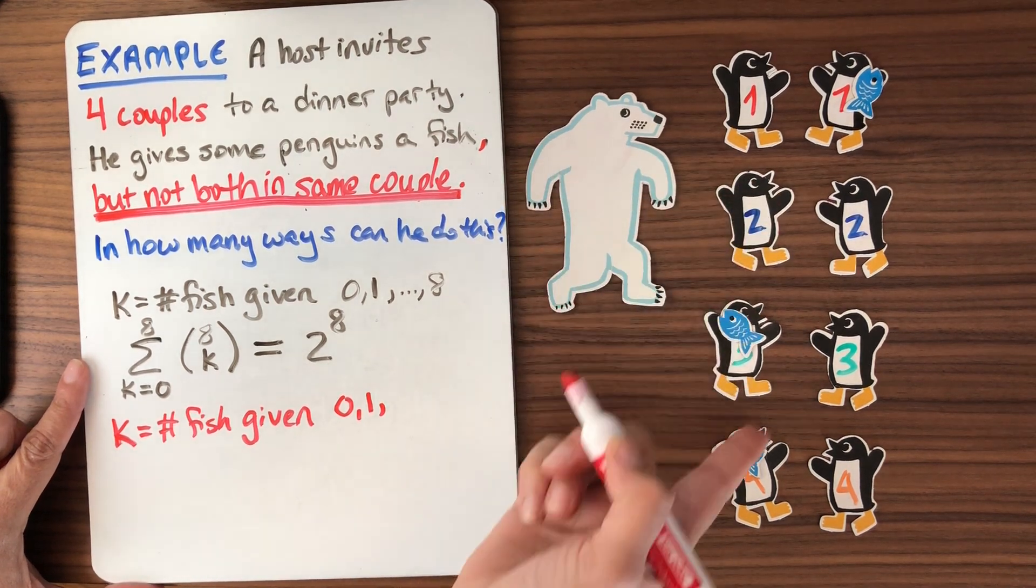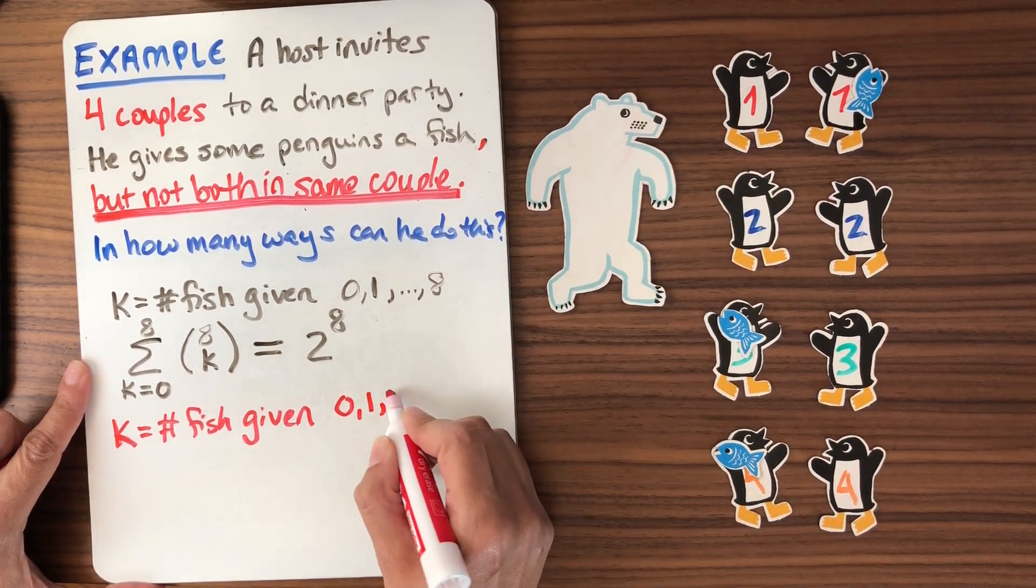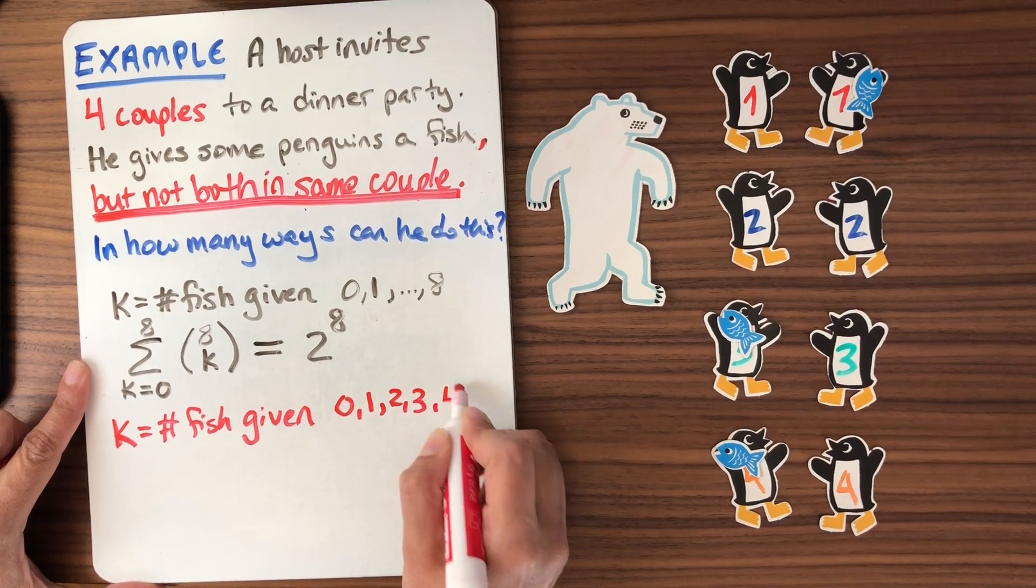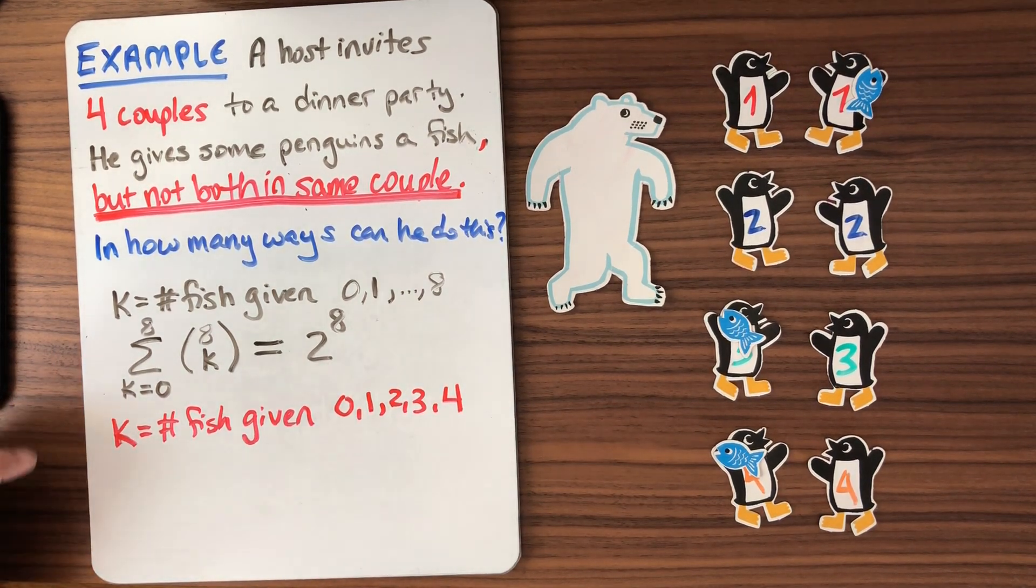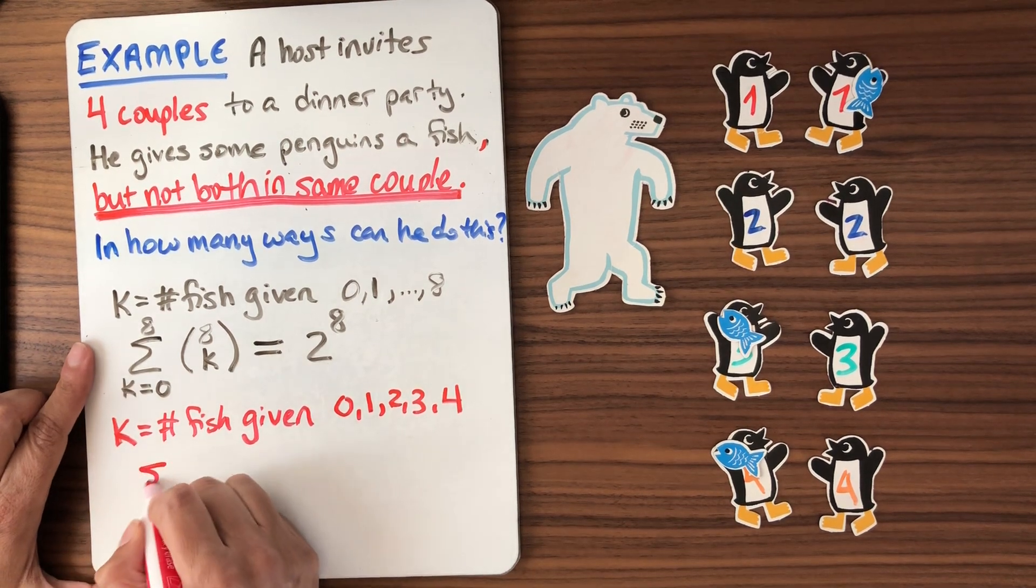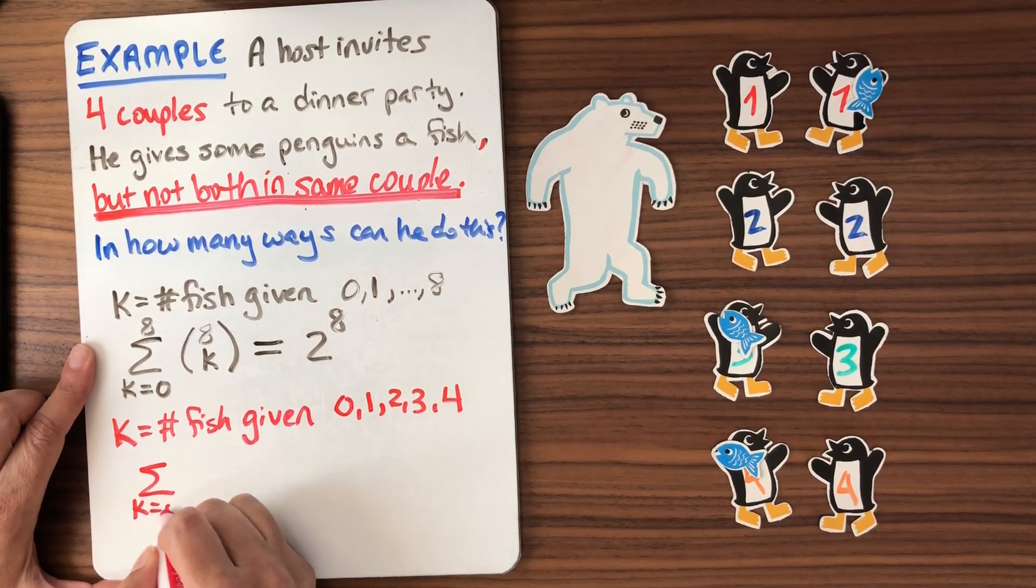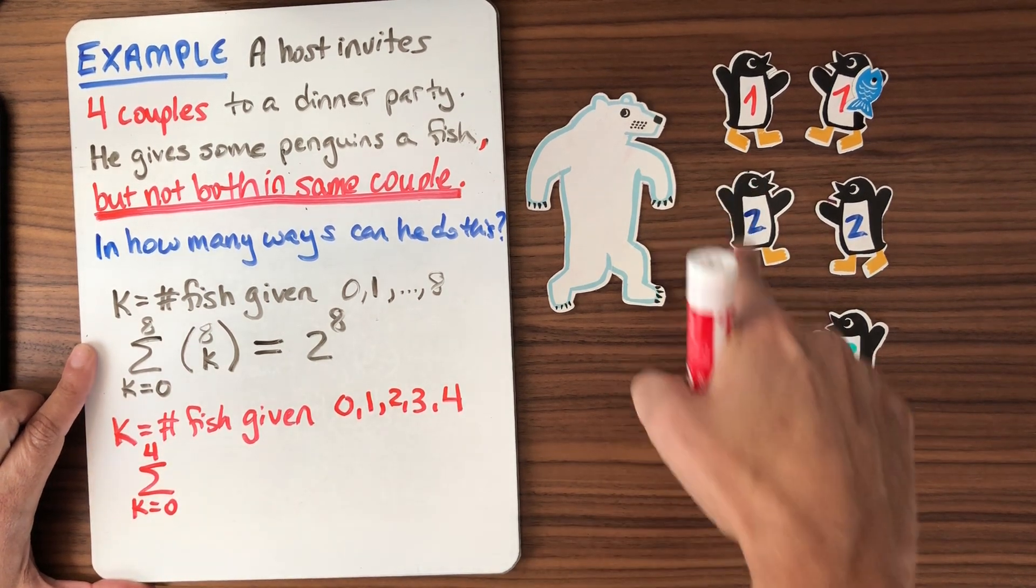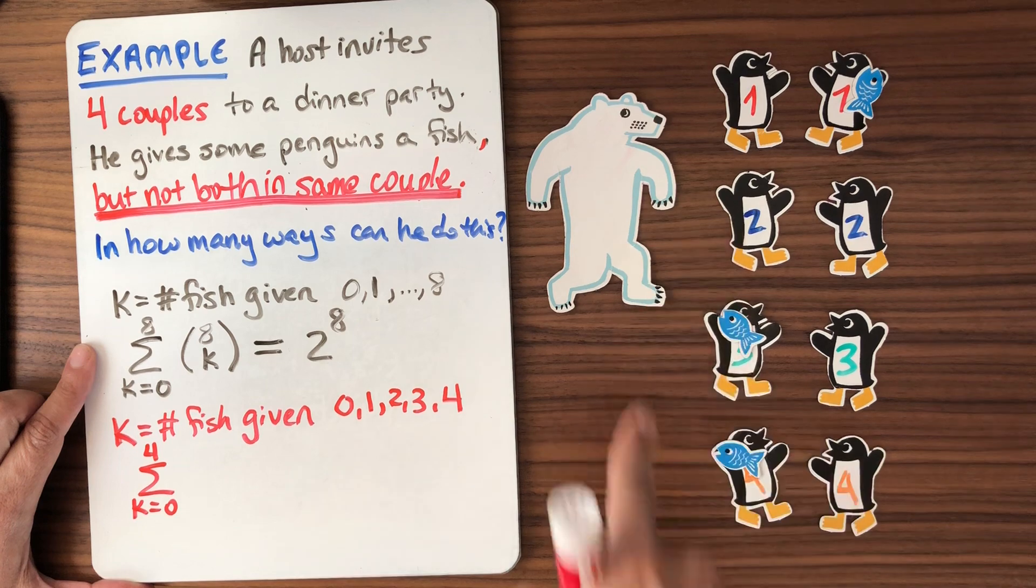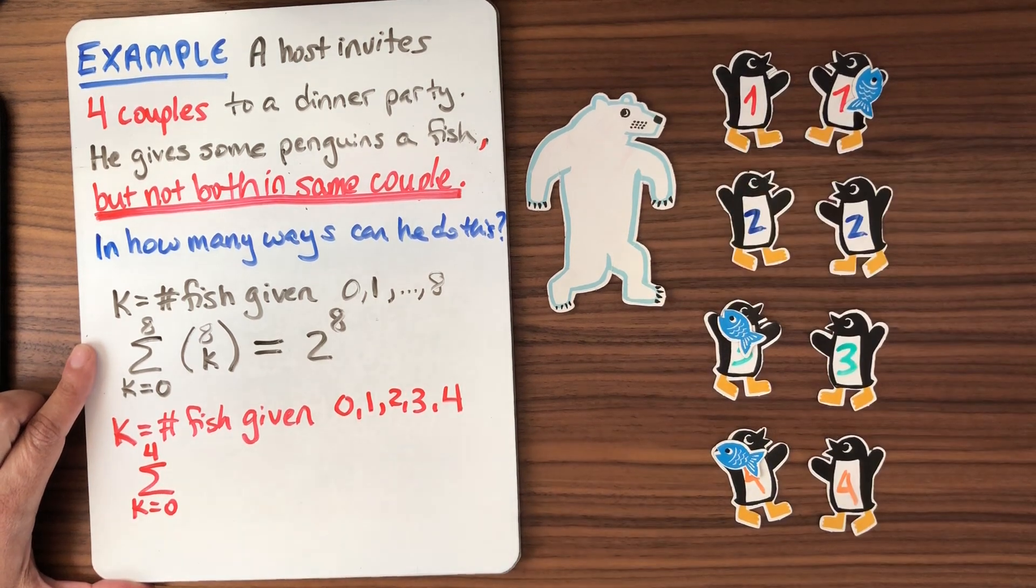Well, he can give at most one per couple. So he can give two, three, or four. And that's it. Four is the maximum number of fish he's going to part with. So we're going to have that summation from K equals zero to four. But now what goes here? He doesn't take each penguin and choose four of them, right? Because he can't choose both of these guys.